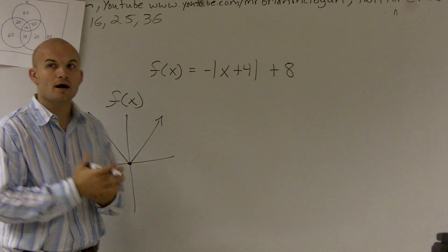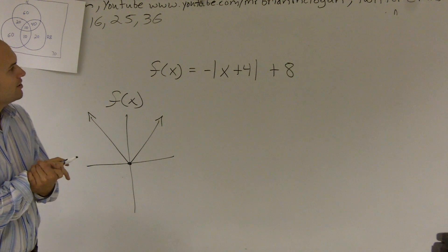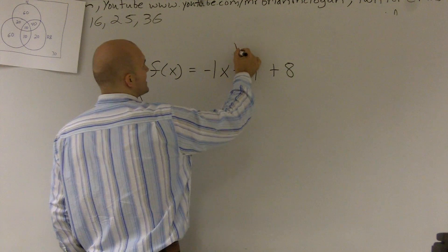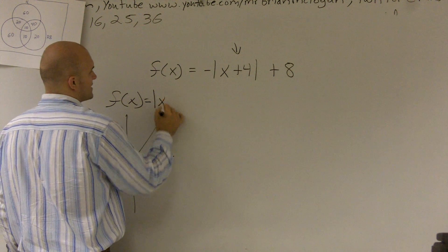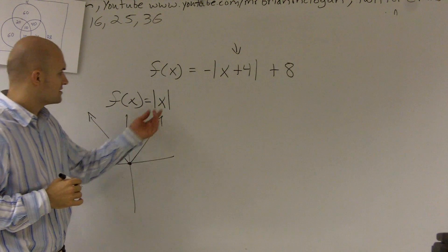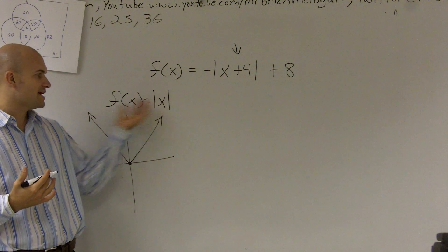So now we need to remember what are all of our transformations that's going to be happening? First thing is we notice, since we have something that's within, it's inside of our function. This is f of x of absolute value of x. So this is the original parent graph. Nothing has been changed. There's no transformation.